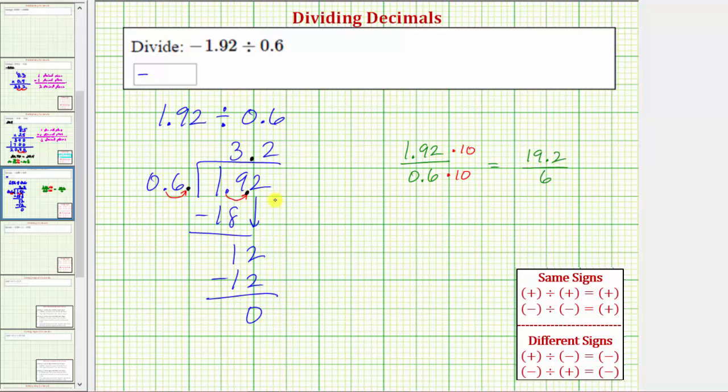we now know the quotient of positive 1.92 and positive 0.6 is positive 3.2. But remember our quotient is really negative 1.92 divided by positive 0.6. And therefore our quotient is negative 3.2. I hope you found this helpful.